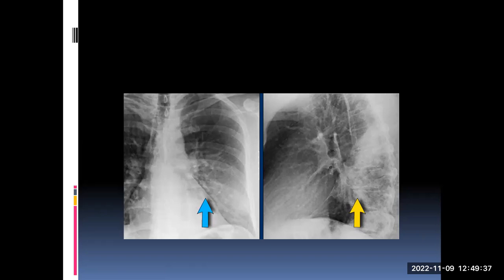In contrast, if you see haziness or consolidation in the lower zone but you can still see the heart border — that is a negative silhouette sign. We know anatomically that what touches the left heart border is the lingula of the left lung, but since the heart border is not silhouetted, we can say it is the apical segments of the left lower lobe that are consolidated.